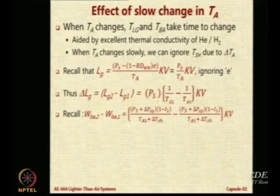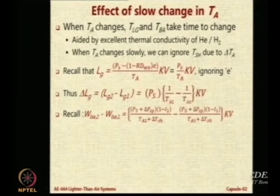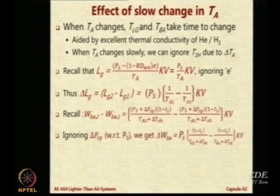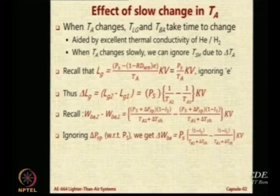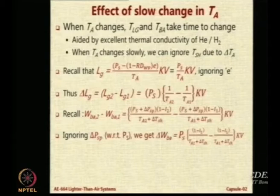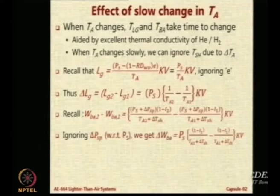Also recall that the balloon air weight difference is (PS + delta PSP) into (1 − I₂) upon temperature at condition 2, minus the same thing at condition 1, into KV. We ignore delta PSP with respect to PS because PS is a large quantity and delta PSP is small. Putting delta PSP equal to 0, you get PS times (1 − I₂) minus PS times (1 − I₁) upon TA2 and TA1 plus the superheat.